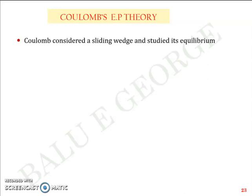Correspondingly, based on those formulas, we had discussed the effect of surcharge, the effect of layered backfill, the effect of water table, the effect of inclined backfill, etc. Now in Coulomb's earth pressure theory, the key difference is that Coulomb considered a sliding wedge and studied its equilibrium, unlike Rankine's theory where just a soil element was considered.